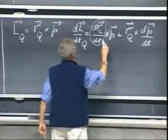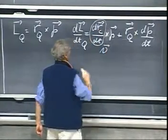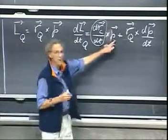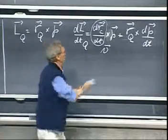This here is the velocity of the object, the velocity vector, which is always in the same direction as P. So this is zero.